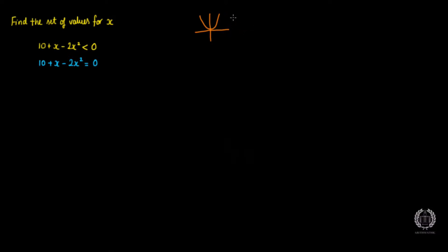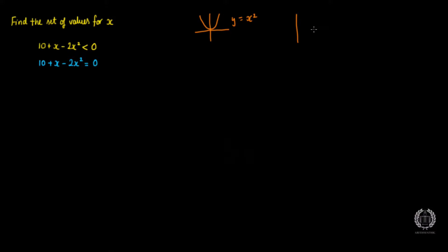A positive x² graph looks like a U-shape — that's y = x². A negative x² graph is going to look like an upside-down U, like a sad face. So I know my graph shape is going to be like that — upside down. You should know: positive x² gives a U-shape, negative x² gives an upside-down U.